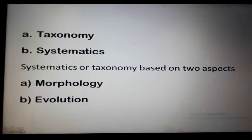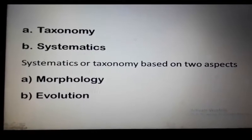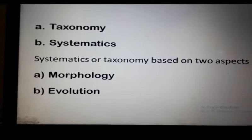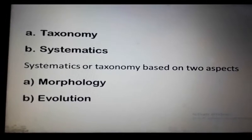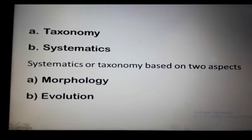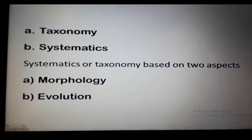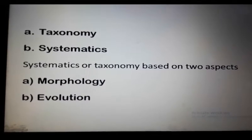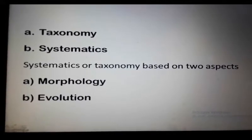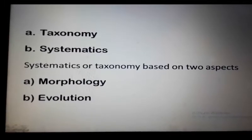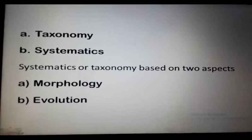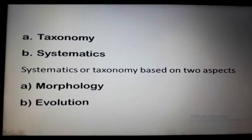The second aspect is evolution. Carolus Linnaeus did not accept evolution, but still many of his groupings reflect evolutionary relationships. Morphological similarities between two animals or plants have a genetic basis, and this gives rise to a common evolutionary history. Animals and plants are grouped according to similar characteristics.